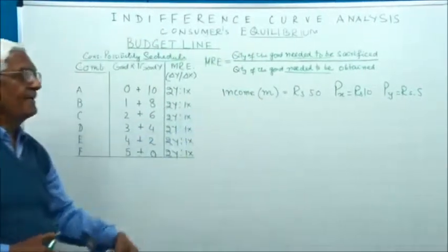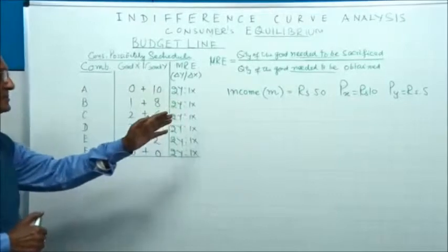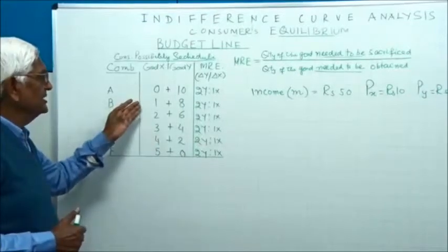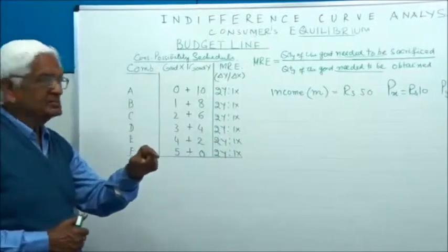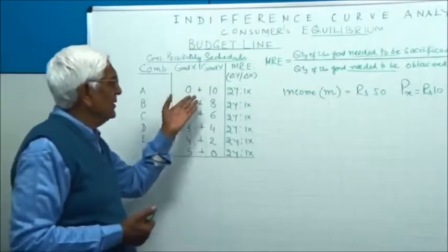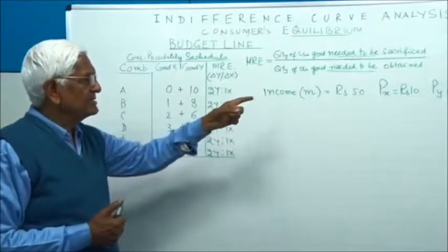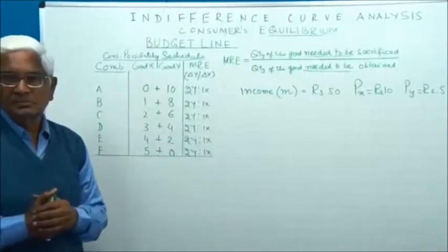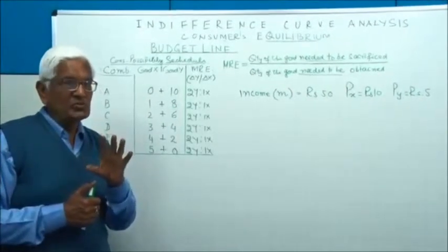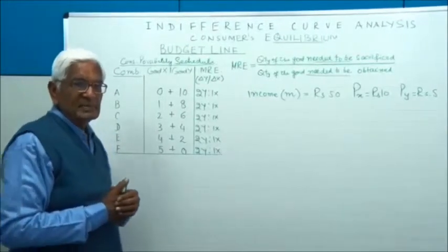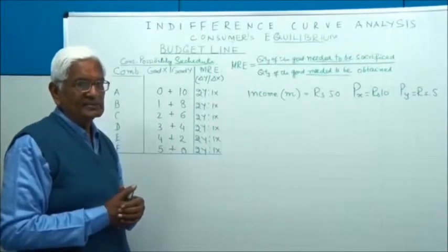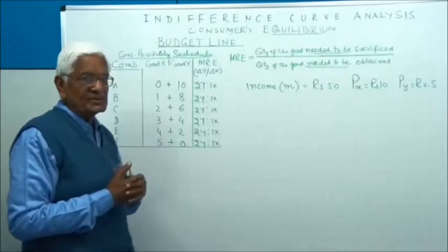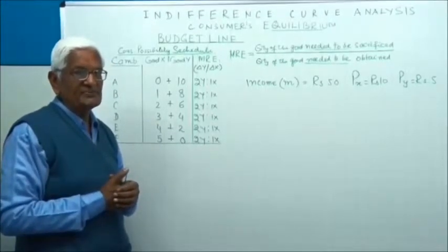On this basis, we have prepared this table. Take the first row: the consumer can afford 0 units of X and 10 units of Y. If he spends all his money on Y, at rupees 5 per unit, from rupees 50 he gets 10 units. Now suppose the consumer wants to buy one unit of X — clearly he will have to buy less of Y. One unit of X costs rupees 10, which is twice the price of Y.